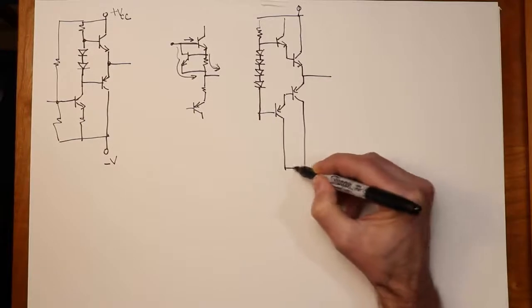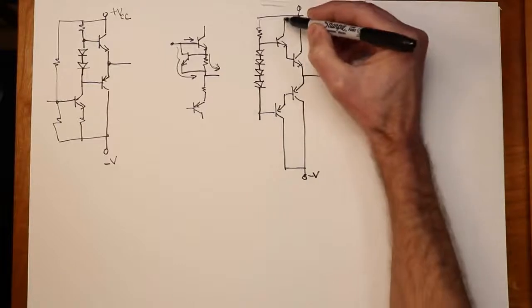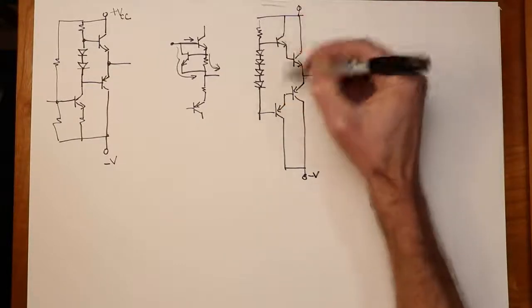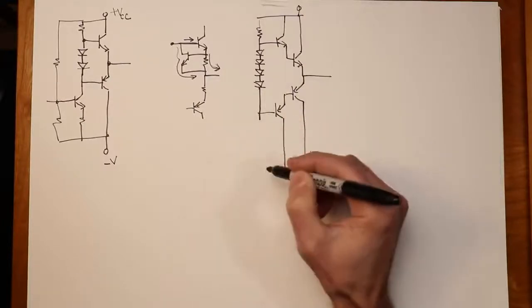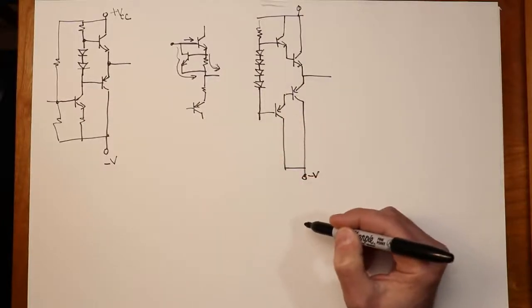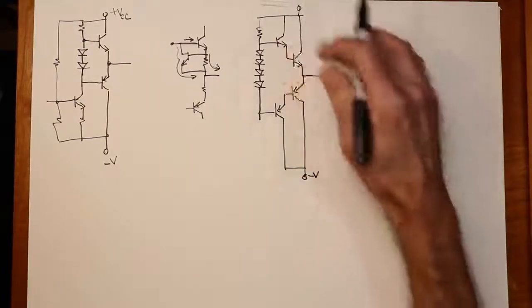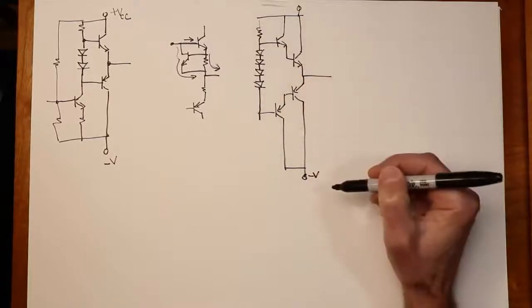So this goes down to our negative power supply. So this configuration is pretty nice. Now you get the beta times the beta. This allows you to get a much greater Z in base. The prior transistor stage, the drive stage doesn't have to be nearly as powerful. So this is a nice way to do this. This would be done discreetly, of course. We would have a small signal transistor here and a large signal transistor here.